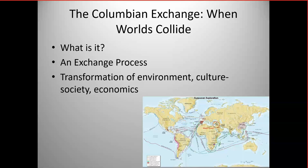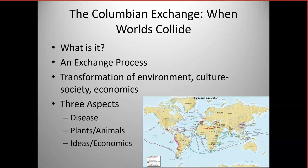When you look at the Columbian Exchange, we're talking about a transformation of environments, the transformation of cultures and societies, and the transformation of economics — really the development of, for the first time, a global economic system. We're going to look at three aspects: disease first, then plants and animals, and then ideas, and associated with ideas, also economics.